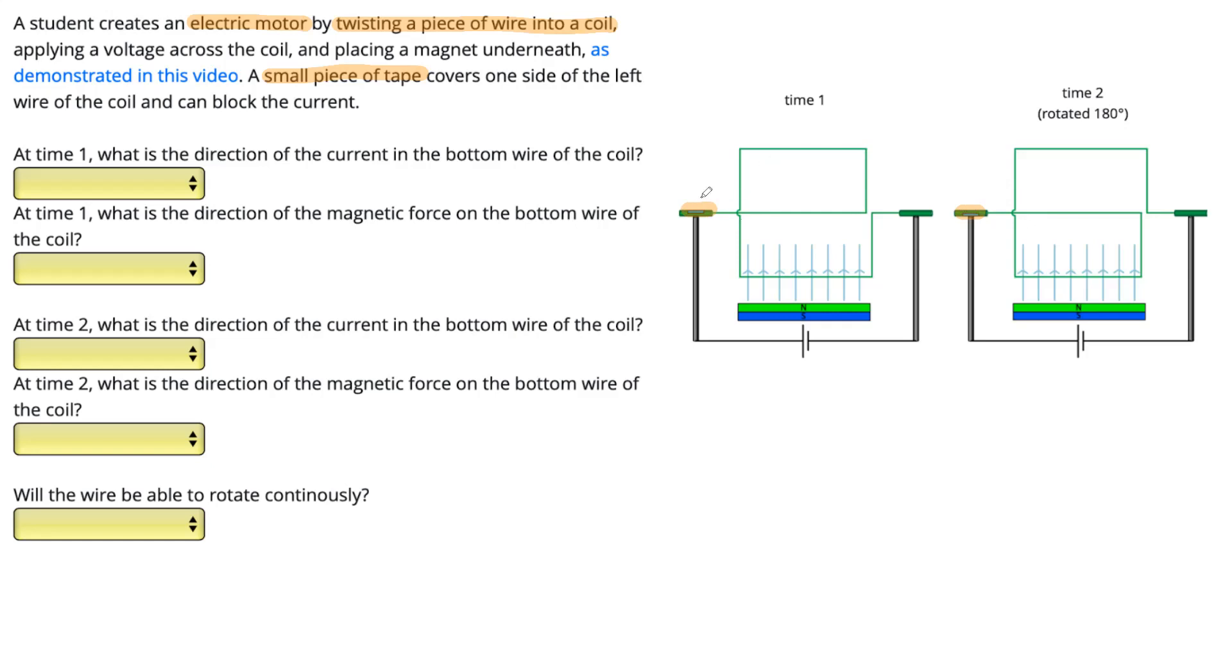So at time one, the current is free to flow, but at time two when it's upside down, the tape is covering it and the current is blocked.